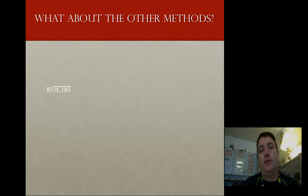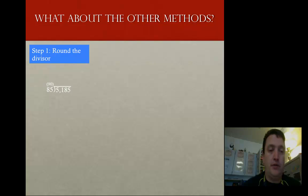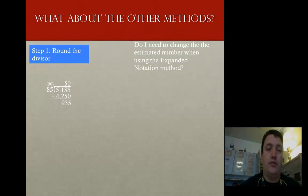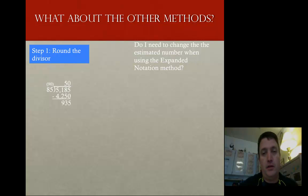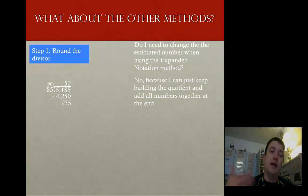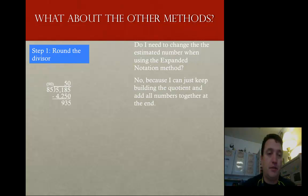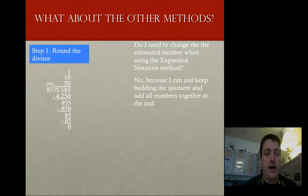What about the other methods? Let's take a look at this from the expanded notation. Step 1: round the divisor. Now I'm going to take out 50 instead of 5. I've got to subtract 4,250 and I get 935. Do I need to change the estimated number when I use expanded notation? No, I really don't, because I can just keep building that quotient up as I go and add all the numbers together at the end. I recognize I can take out 10 more, so that's 850, leaving me 85. I take out 1 more — there's my 85. I subtract, and I get the same answer: 61.